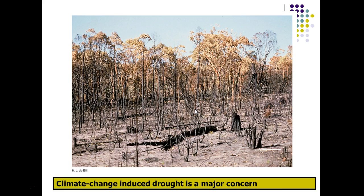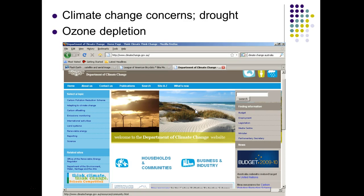Australia has experienced the direct effects of climate change as much as any large country in the world. Recent droughts have illustrated the extent to which this issue is being taken seriously, not only by Australia but by New Zealand as well. Because of their location in the southern hemisphere, ozone depletion is also a significant concern.